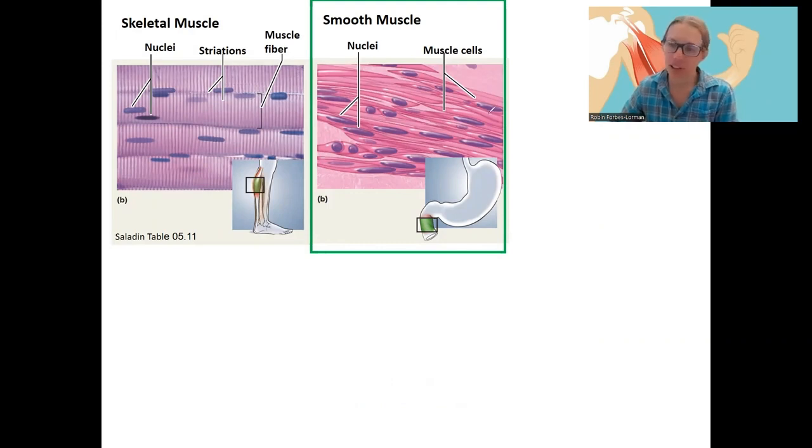The cells, instead of being really long or branched like cardiac muscle, or striated like the other two, they're smooth and then they're spindle-shaped. So that's how you can recognize this. They're also a little bit smaller. It's a spindle, kind of like that, with one nuclei in there.